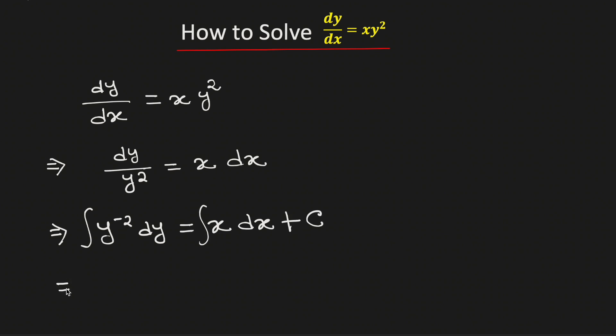Now using the power rule of integration, this will be equal to y to the power minus 2 plus 1 divided by minus 2 plus 1, which is equal to x² divided by 2 plus c.